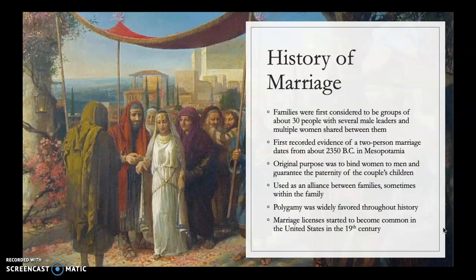From there, marriage became used as an alliance between families, sometimes within the family, to the point that many anthropologists believe a majority of marriages throughout history were between first cousins. And polygamy was widely favored throughout history.